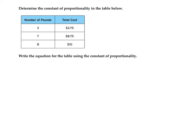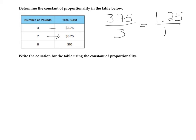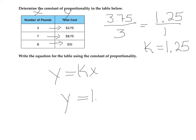Still determining the constant of proportionality, this time from a table. Pull one ratio from the table to find the unit rate. I'll pull the first one: 375 over 3. To get to 1, I know 3 goes in and this would be $1.25. Checking: multiplying across gives the same values. So the constant k is $1.25, and the equation is y equals $1.25x.